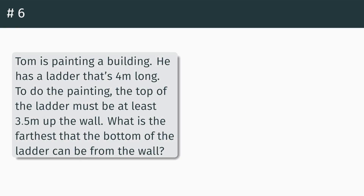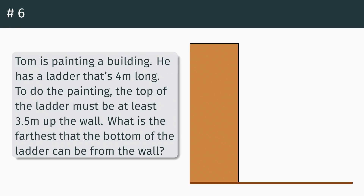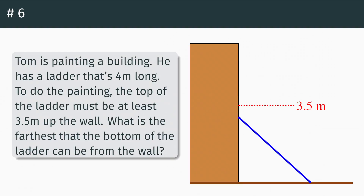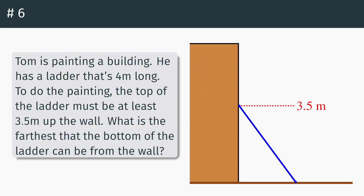Last problem — a nice word problem. Tom is painting a building. He has a ladder that's four meters long. To do the painting, the top of the ladder must be at least 3.5 meters up the wall. What is the farthest that the bottom of the ladder can be from the wall? We draw a picture: there's the building Tom is going to paint, the ladder has to reach a height of 3.5 meters, and the ladder is 4 meters long. As we slide the bottom of the ladder out from the wall, the top slides down — the farthest the bottom can be is when the top is exactly at 3.5 meters.